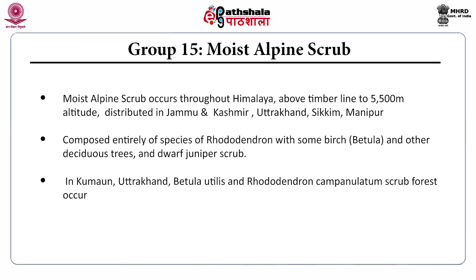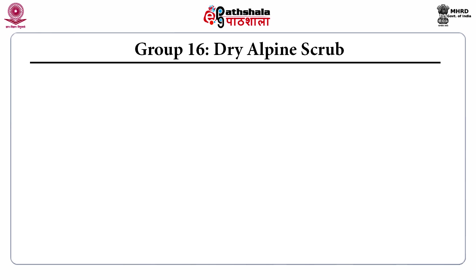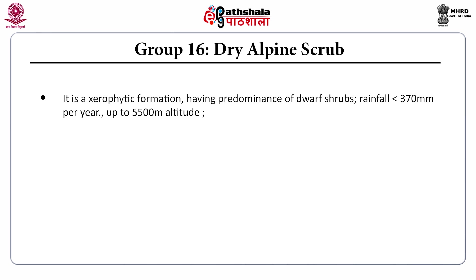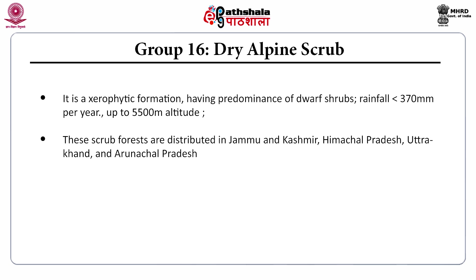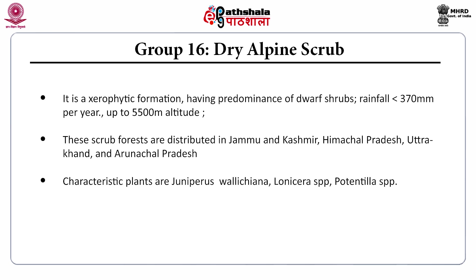Group 16, the dry alpine scrub, is a xerophytic formation having predominance of xerophytic shrubs, rainfall less than 370 mm per year, up to 5500 meters altitude. These scrub forests are distributed in Jammu and Kashmir, Himachal Pradesh, Uttarakhand, and Arunachal Pradesh. Characteristic plants are Juniperus wallichiana, Daphne species, and Potentilla species.